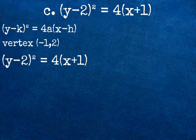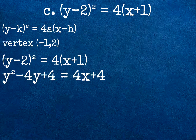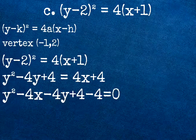We expand: y to negative 2 times 2, and negative 2 by itself, then 4 times quantity x plus 1. The answer is y squared minus 4y plus 4 equals 4x plus 4. Then we are going to move 4x plus 4 to the other side. The answer will be y squared minus 4x minus 4y plus 4 minus 4 equals 0.